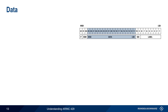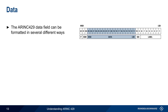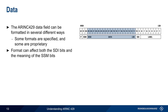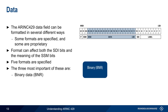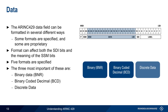The data field in an ARINC 429 word is 19 bits long and can be formatted in several different ways. Some of these formats are given in the specification, but proprietary methods can also be used. Note that the format of the data field may affect both the SDI bits as well as the interpretation of the SSM bits. There are five standard data field formats in ARINC 429, but in this presentation we'll cover the three most important ones: binary data, binary coded decimal, and discrete data. These formats may also be combined as a so-called hybrid data format.